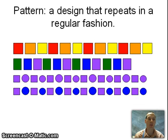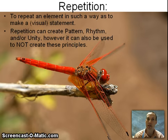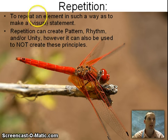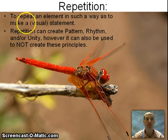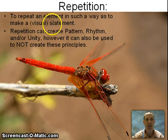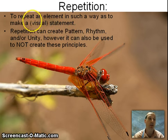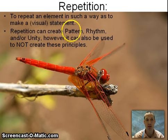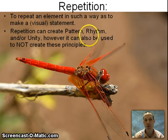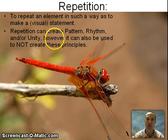Now, if we look at another picture and think about the idea of repetition — repetition is to repeat an element in such a way as to make a visual statement. That visual statement idea is different from pattern, rhythm, or unity. Repetition can be used to create pattern, rhythm, or unity; however, it can also be used just as repetition on its own.